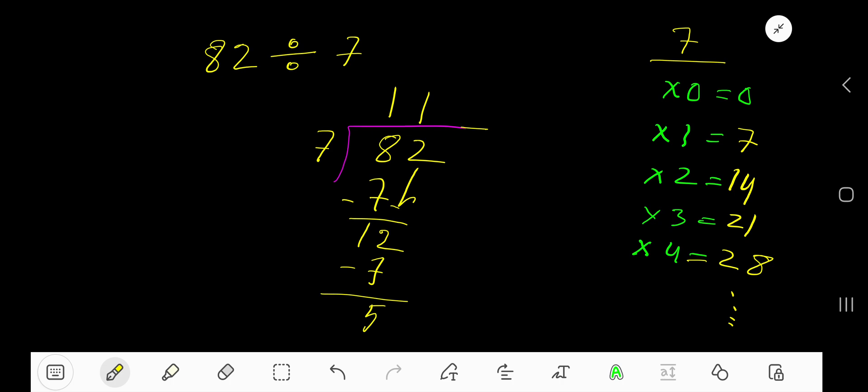So your answer is 11 remainder 5. But if you want to write your answer in decimal form, what will happen?